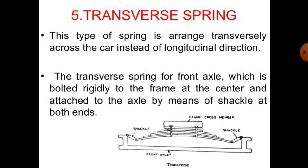The fifth type is the transverse spring. In this diagram, the front axle is connected with the help of two shackles connected to the leaf spring, and this leaf spring runs in a longitudinal direction. This type of spring is arranged transversely across the car instead of longitudinally. The transverse spring for the front axle is bolted rigidly to the frame at the center and attached to the axle by means of shackles at both ends.